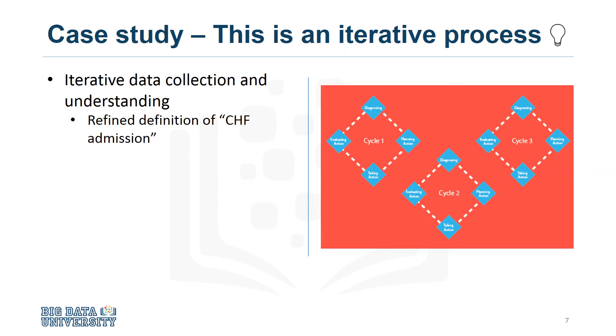Initially, the meaning of congestive heart failure admission was decided on the basis of a primary diagnosis of congestive heart failure. But working through the data understanding stage revealed that the initial definition was not capturing all of the congestive heart failure admissions that were expected based on clinical experience. This meant looping back to the data collection stage and adding secondary and tertiary diagnoses, and building a more comprehensive definition of congestive heart failure admission.